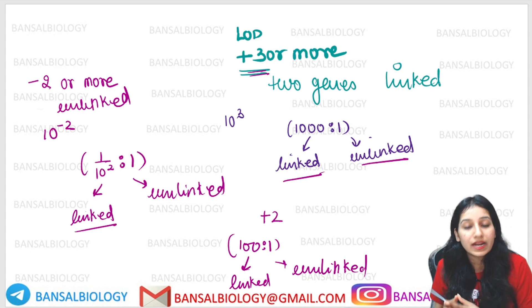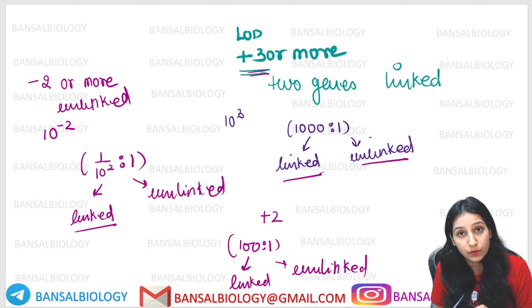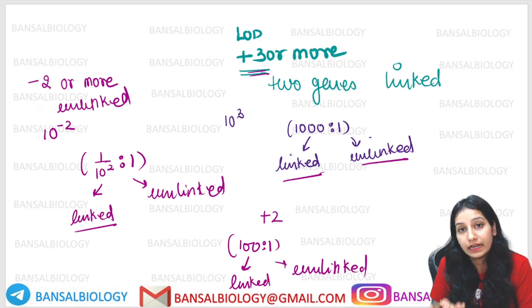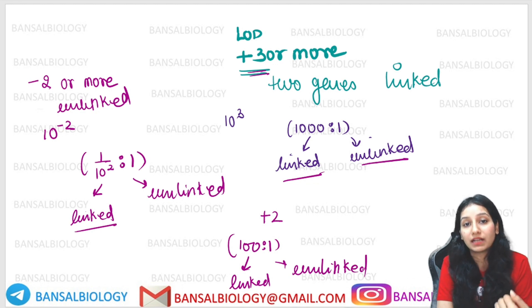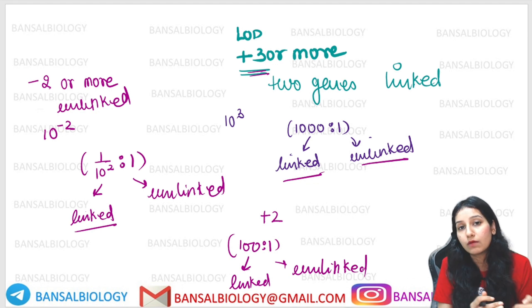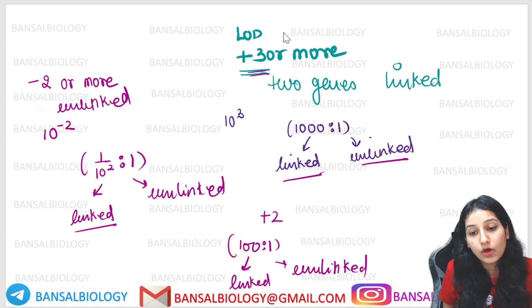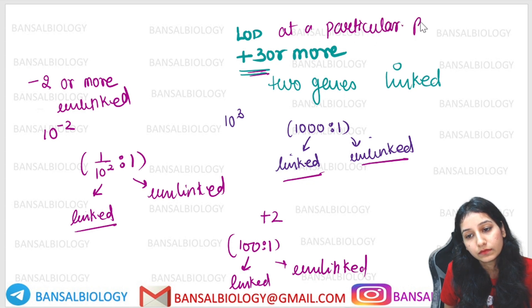So to summarize: a LOD score of plus 3 or greater at a particular recombination frequency means the two genes are linked. A LOD score of minus 2 or lower at a particular recombination frequency means the genes are unlinked.